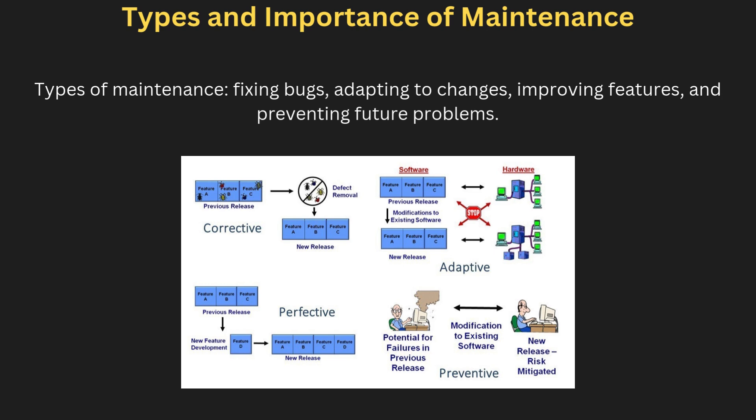Software maintenance is critical to the long-term success of any software product. There are four main types of maintenance: corrective maintenance, adaptive maintenance, perfective maintenance, and preventive maintenance. Corrective maintenance fixes bugs and errors reported by users after the software is deployed. Adaptive maintenance adjusts the software to accommodate changes in its environment, such as new hardware or operating systems.